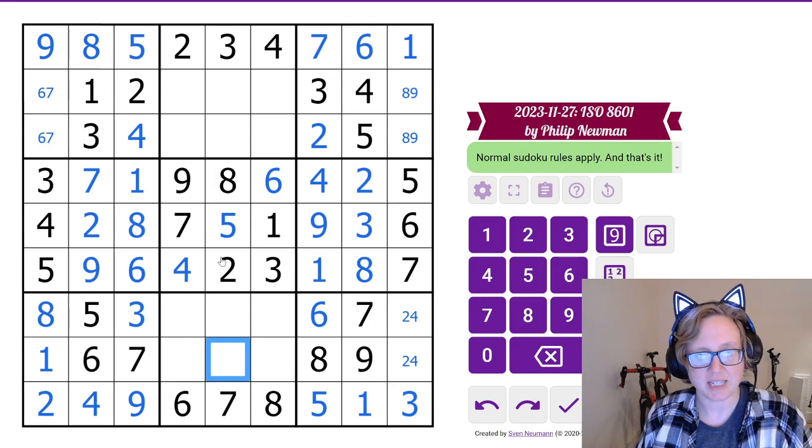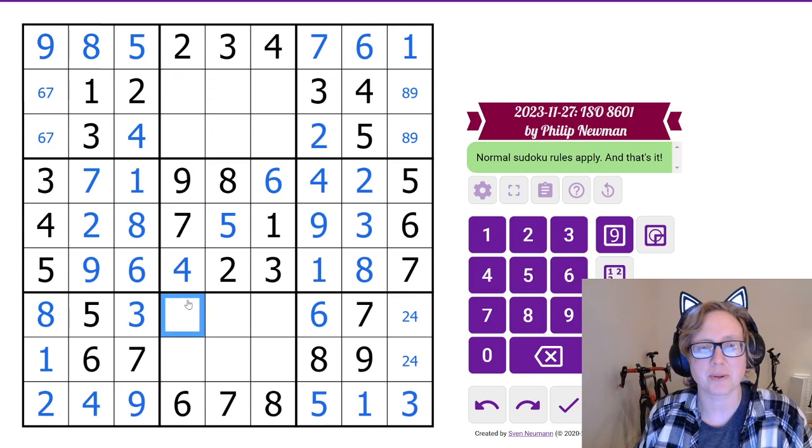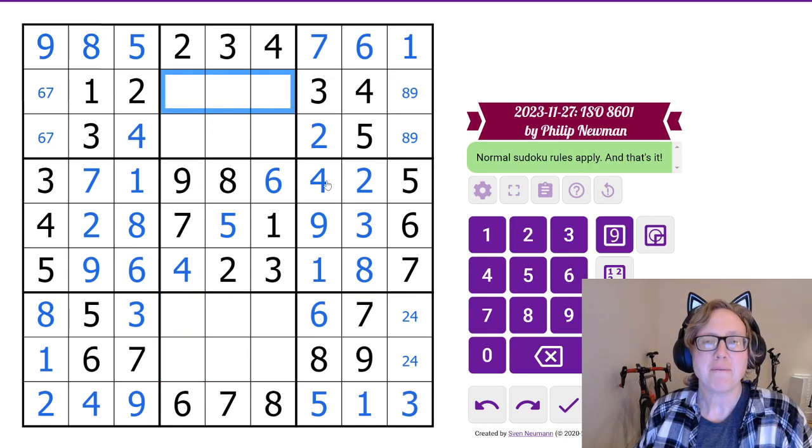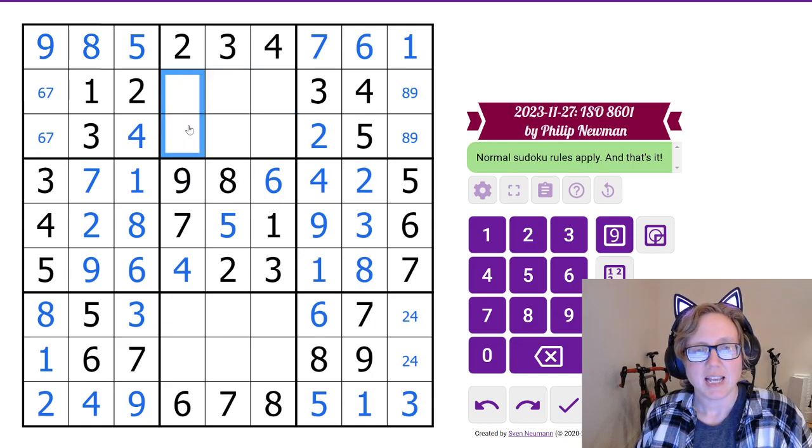We can't resolve our 2, 4 just yet, we should be able to shortly. So let's start looking, let's look horizontally actually. So we need 5, 6, 7, 8 and 9 here. And nothing is jumping out at me in that row.